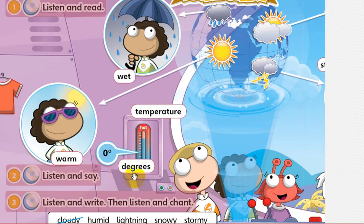The word degree has more than one meaning, but in terms of weather conditions — which is what we are concerned about today — the word degree is a unit of measurement. When I say the temperature is measured by degrees, today is 28 or 29 degrees. The word temperature itself means how hot or how cold it is.